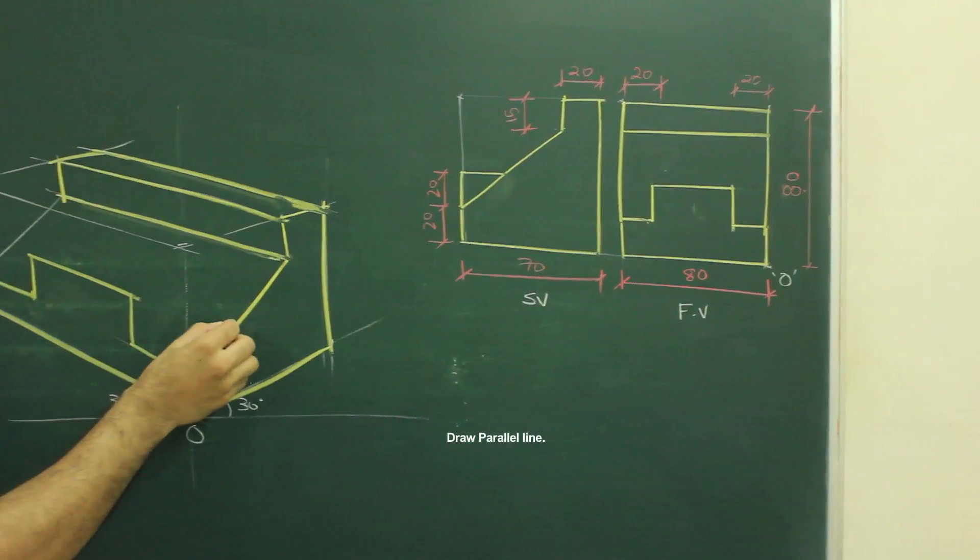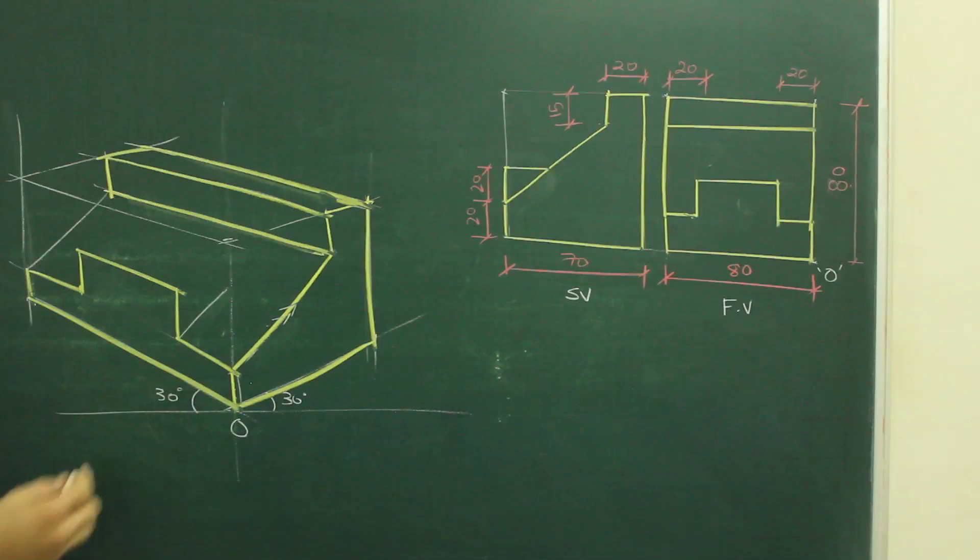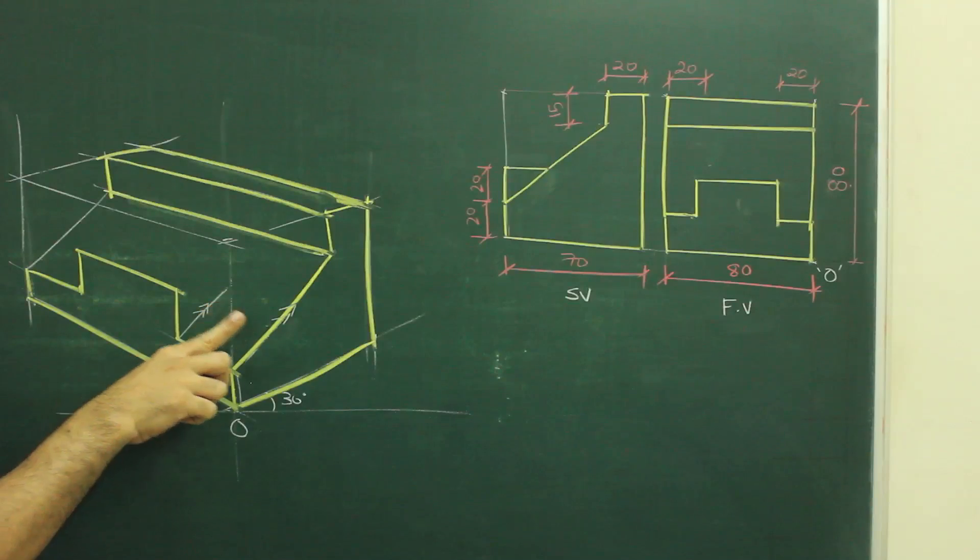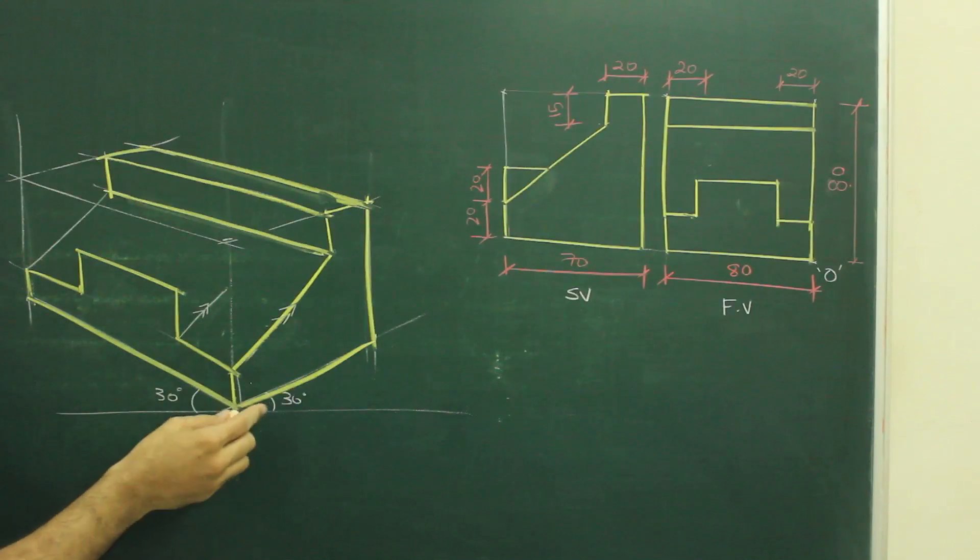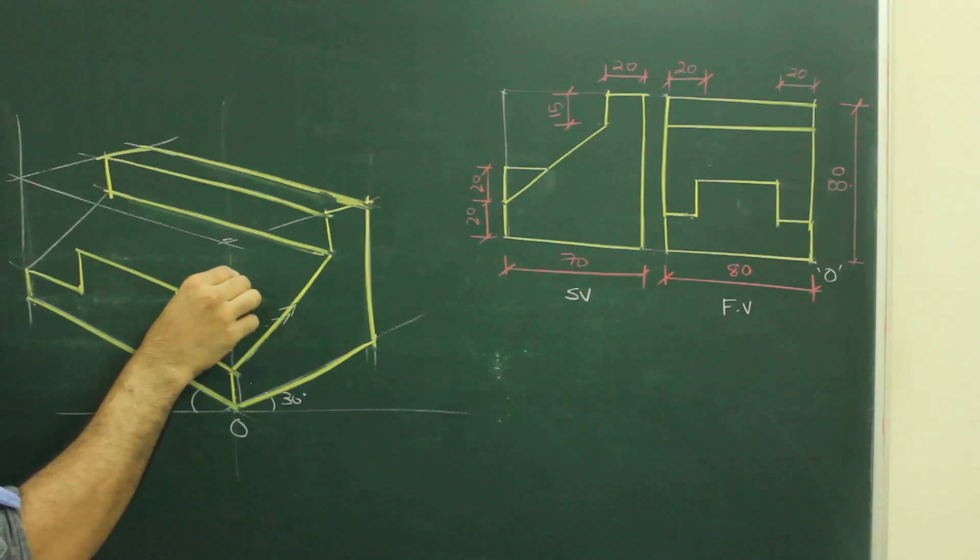And we need to draw parallel to this slope, passing through this point and we need to draw parallel to this, which is 30 degree from here, wherever they meet, that would be the point.